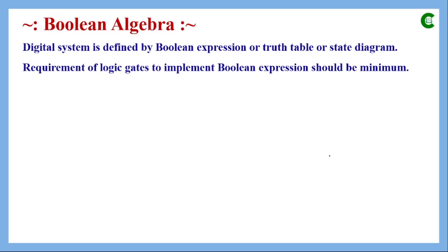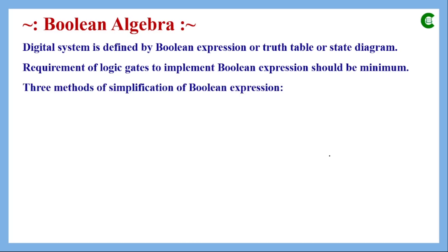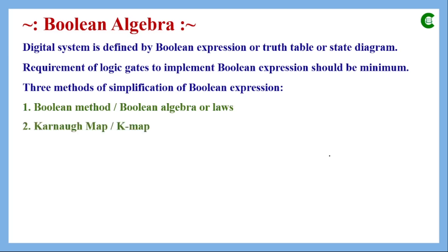Before we implement a Boolean expression we should simplify it so that we can use a minimum number of logic gates. We have three methods to simplify Boolean expressions: Boolean algebra, which has many laws; the Karnaugh map, or K-map; and the third method is the Quine-McCluskey method.